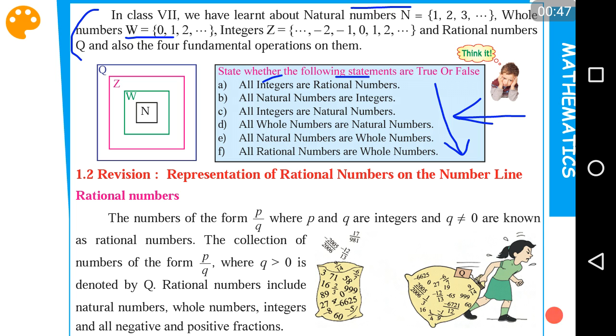Integers also have negative numbers. You can see that rational numbers also include the fractional numbers, apart from the integers.